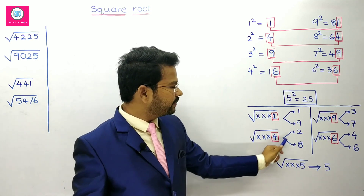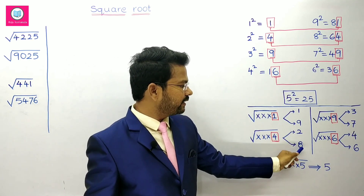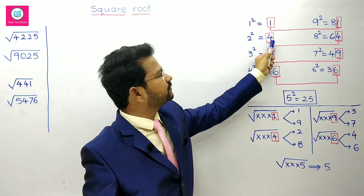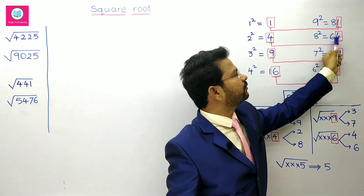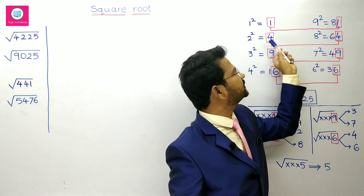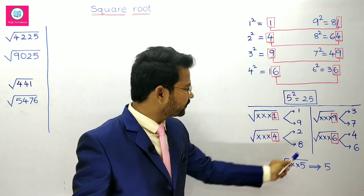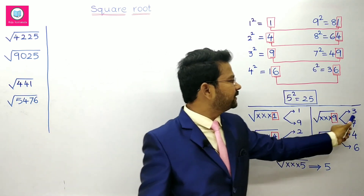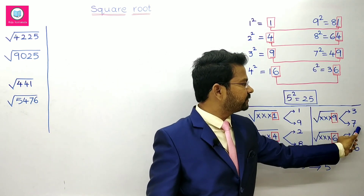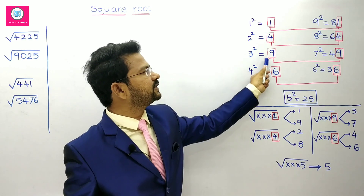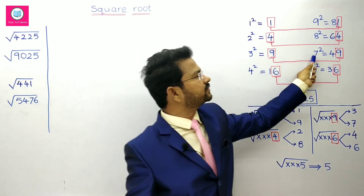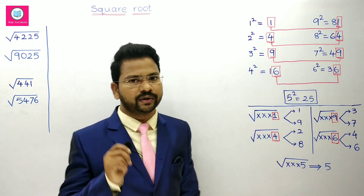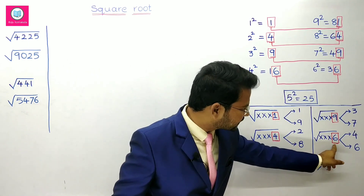If a number ends with 4, either it may be 2 squared or 8 squared. The reason: 2 squared is 4 and 8 squared is 64, but the units place is 4 only. If a number ends with 9, either it may be 3 squared or 7 squared. 3 squared is 9 and 7 squared is 49, but the units place is 9 only.